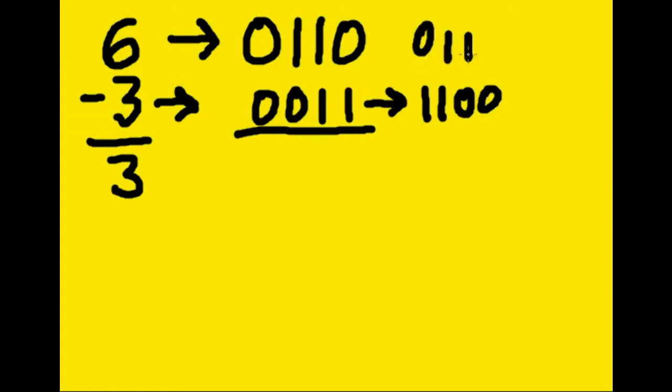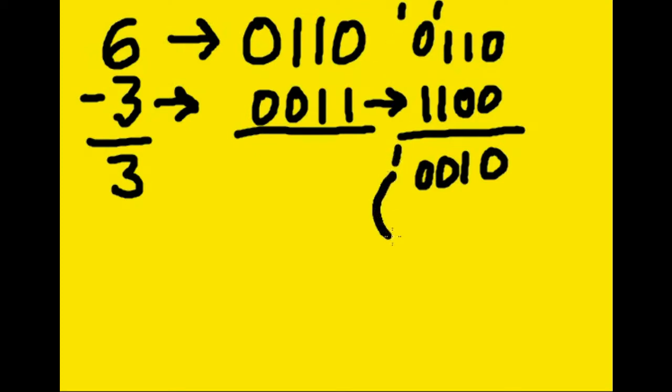Zero and zero is zero. One and zero is one. One and one is zero, carry the one. One and one is zero, carry the one. I'm going to take that one and add that to here.